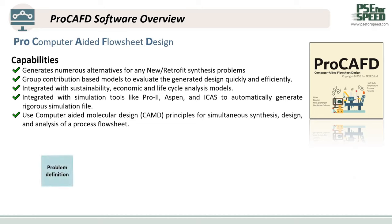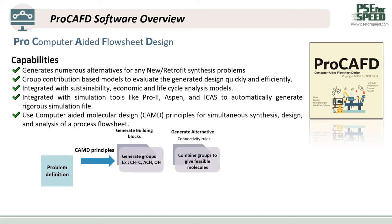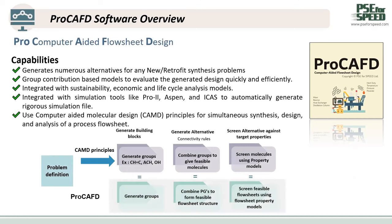When the program is defined using the CAMD Principle, it will generate the functional group, then combine the groups to give a feasible molecule, and then screen the molecule using the property model. In the same way, Pro-CAFD will generate the group, combine the process group to form feasible flow sheet structures, and then screen the feasible flow sheet using the flow sheet property model.